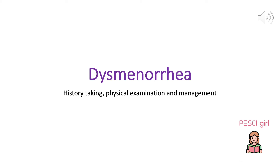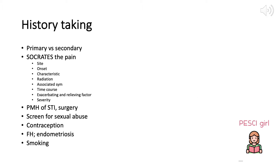Hello everyone, Pesky Girl here. Today we want to talk about dysmenorrhea: what are the important points to remember in history taking, how to do a physical examination, and how we should manage primary and secondary dysmenorrhea. In history taking, the most important thing is to diagnose primary versus secondary causes.